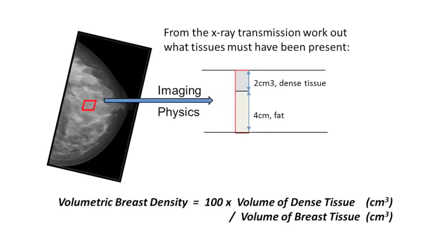We have to understand the physics and how the transmission depends on the various imaging parameters — kilovoltage, tube current, exposure time, and breast compression thickness, which is very important to know. With this information we can compute the transmission of radiation through the breast and from that estimate the volume of the breast itself, the volume of the dense tissue, and what we call volumetric breast density, which is just the ratio of those two quantities.